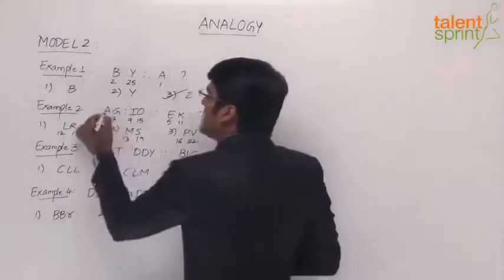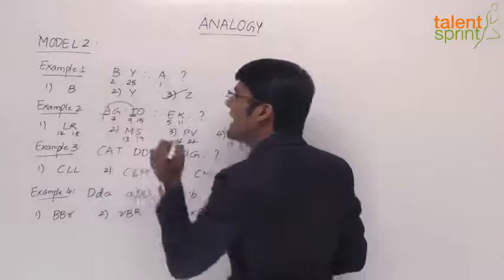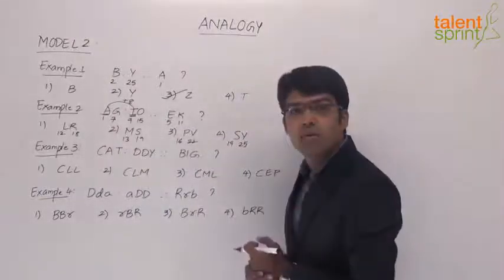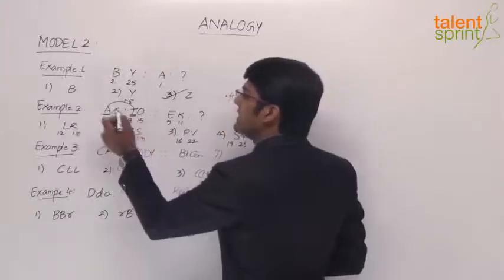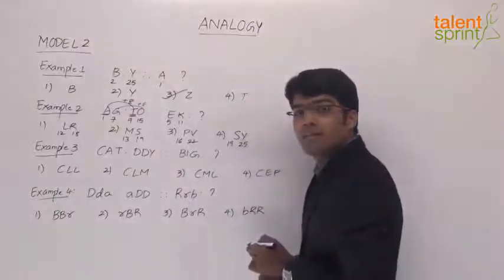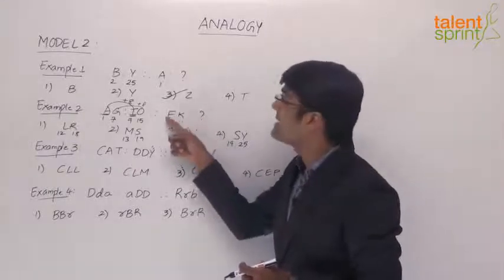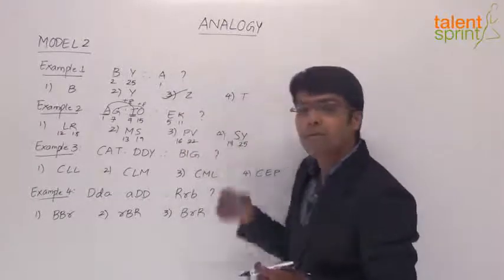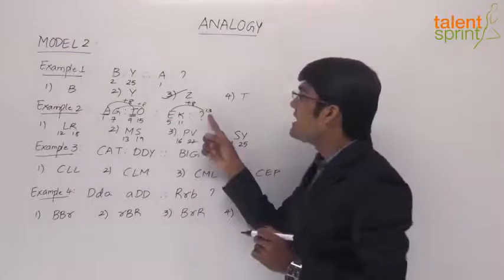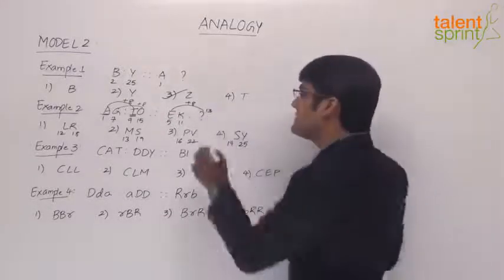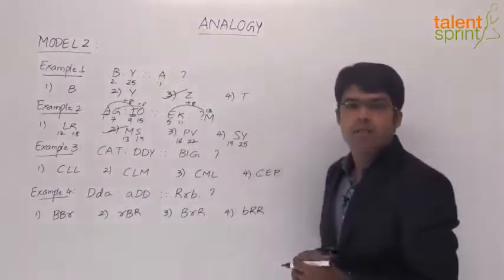Let us now look at the first positions in each pair. The first position here is A and the first position here is I. A is 1 and I is 9 — the distance is 8, we are moving 8 positions in the forward direction. Likewise, in the second positions of each pair, G and O are positions 7 and 15 — 7 plus 8 is 15, so even in the second pair the distance is 8. So in the second set, the first letter has to be 8 places away from E: 5 plus 8 is 13, so the answer has to start with the 13th position, which is M. There is only one option starting with M, so the second option MS is the correct answer.